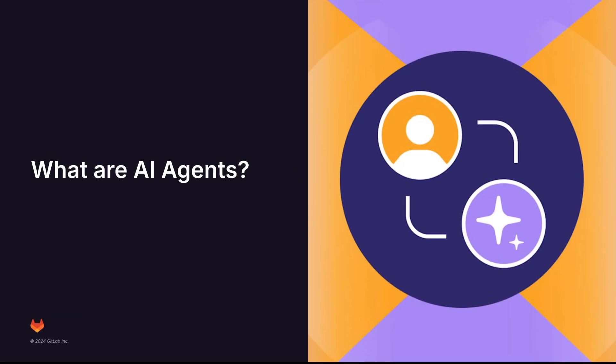Let's take a moment to understand AI agents and agentic AI. Agentic AI is a type of artificial intelligence that leverages advanced language models and natural language processing to take independent action. Unlike traditional generative AI tools that require constant human direction, these systems can understand requests, make decisions, and execute multi-step plans to achieve goals.